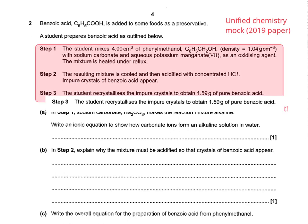The first thing to do is to read what the student did. They take a specific amount of phenylmethanol, give you the density, and they mix it with sodium carbonate and aqueous potassium manganate 7 — an oxidizing agent — and they heat the mixture under reflux. The resulting mixture is cooled and then acidified with concentrated HCl, and impure crystals of benzoic acid appear. Finally, the student recrystallizes the impure crystals to obtain 1.59 grams of pure benzoic acid. There's some data in there, but you don't need to process it just yet.